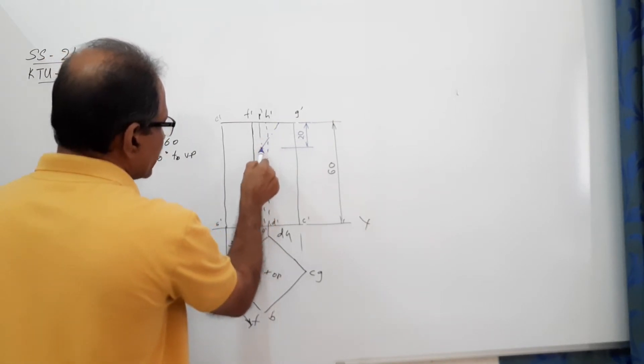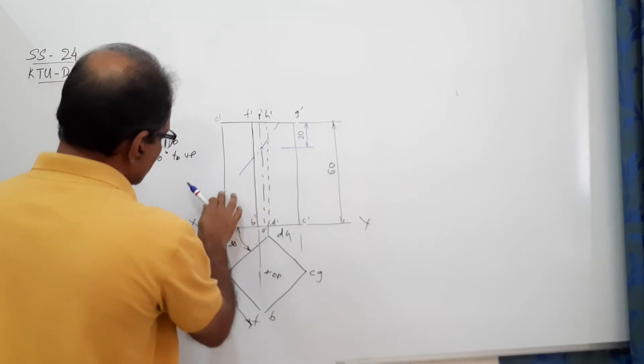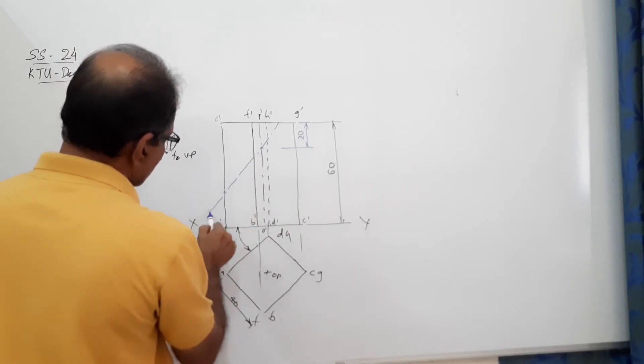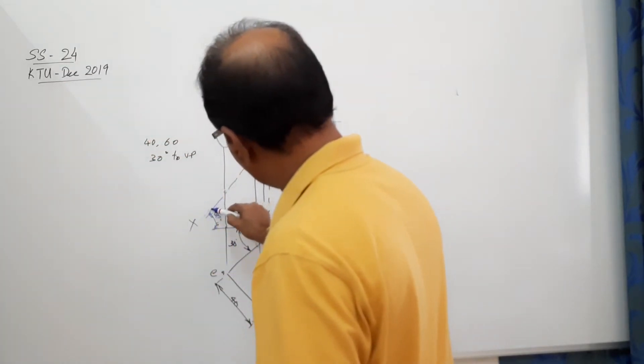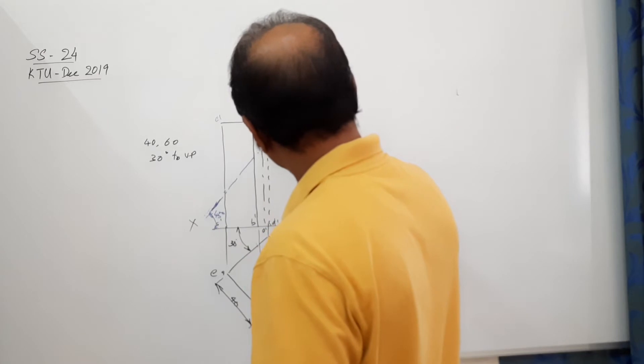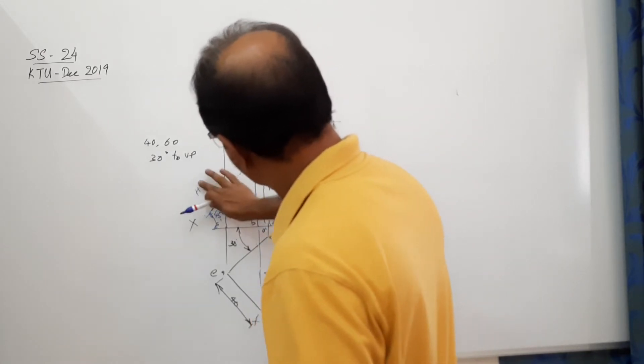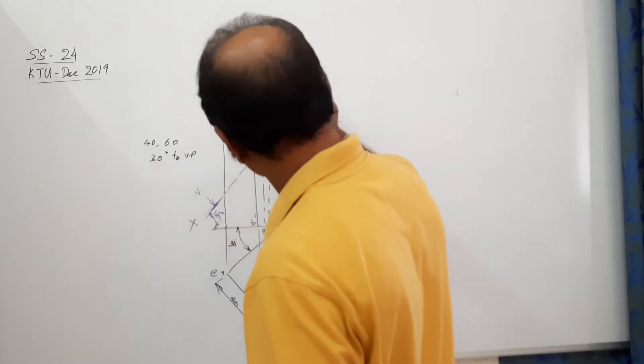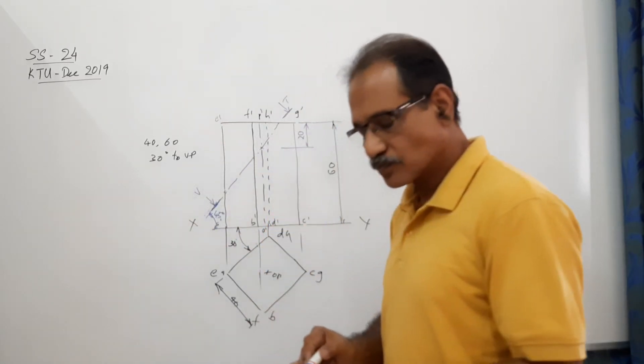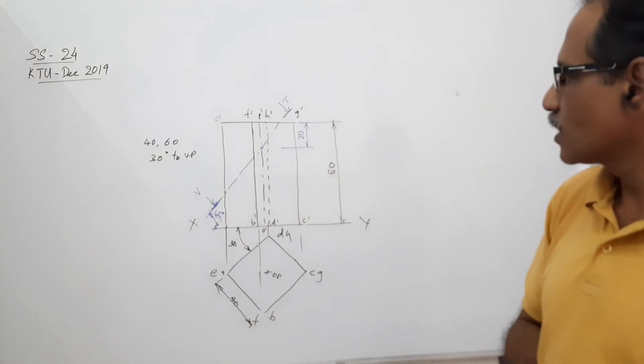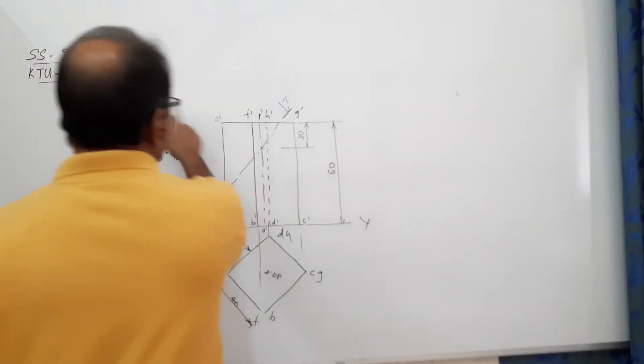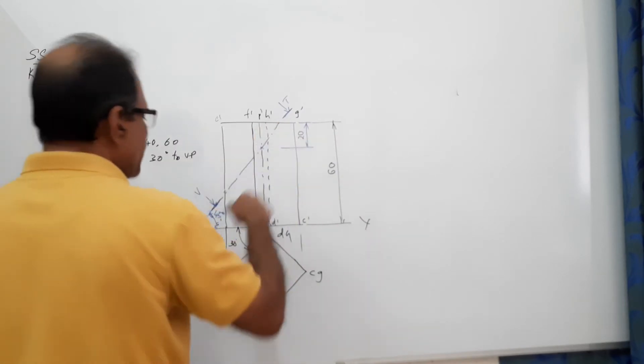Which portion will you remove? You will remove this portion, that means this will be kept. So I will darken this. The darkening indicates that this portion is remaining.